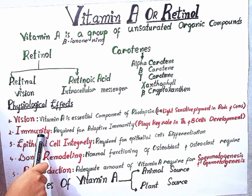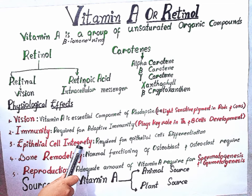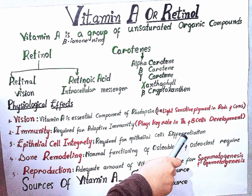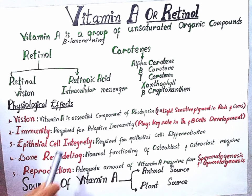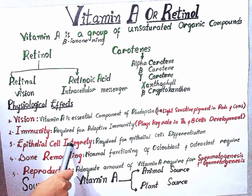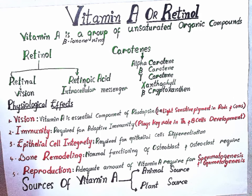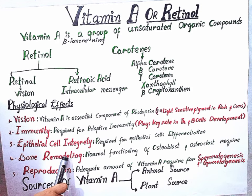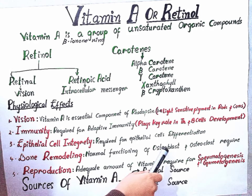Next is epithelial cell integrity. Vitamin A plays a crucial role in epithelial cell differentiation and development, meaning it plays a key role in our skin. The deficiency of Vitamin A causes keratinization — the scaliness of our skin — and suppression of Vitamin A causes aging effects on our skin.